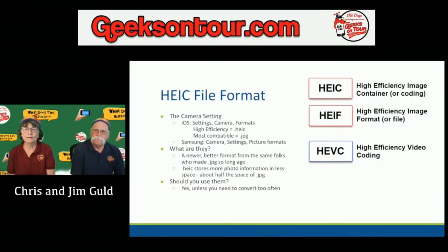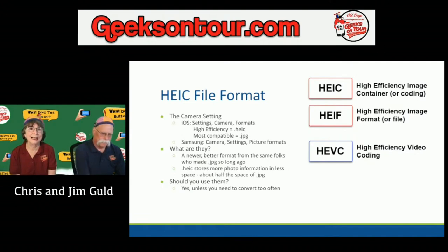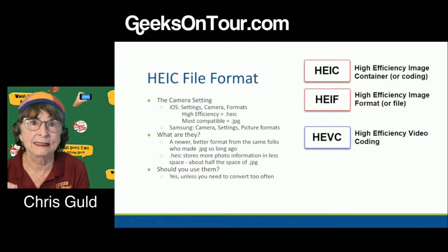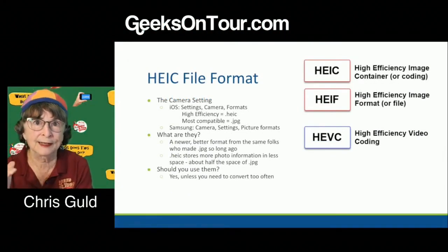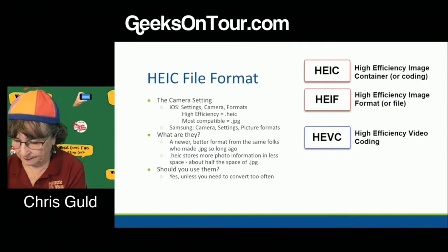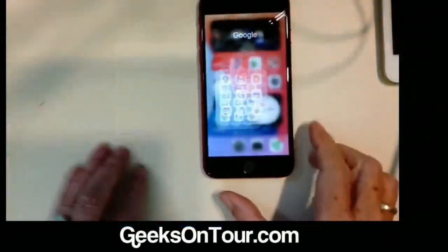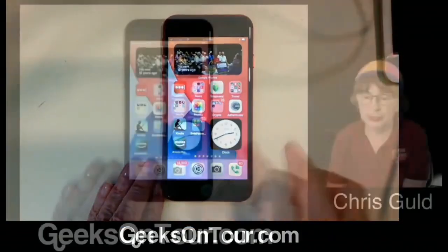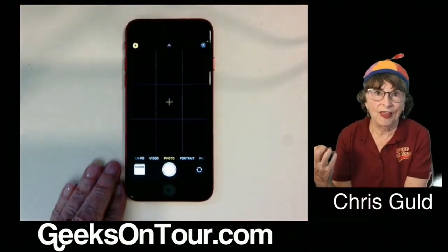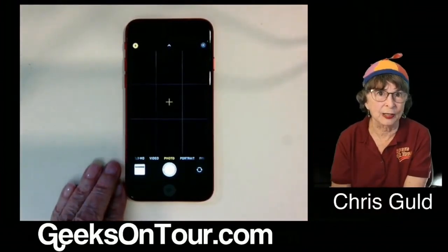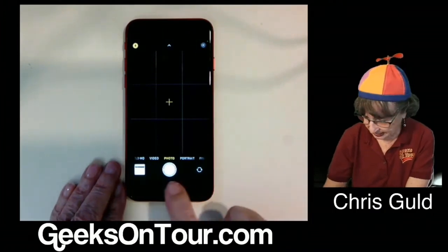You may have seen this. If you use an iPhone, you likely have seen it because HEIC is the default photo format in iOS. I'm going to show you the camera settings first, then explain it a bit, then tell you how you can convert if you need to. So here's the iPhone — when you take a picture and save it, what format is it going to be saved in? That's controlled by your settings.